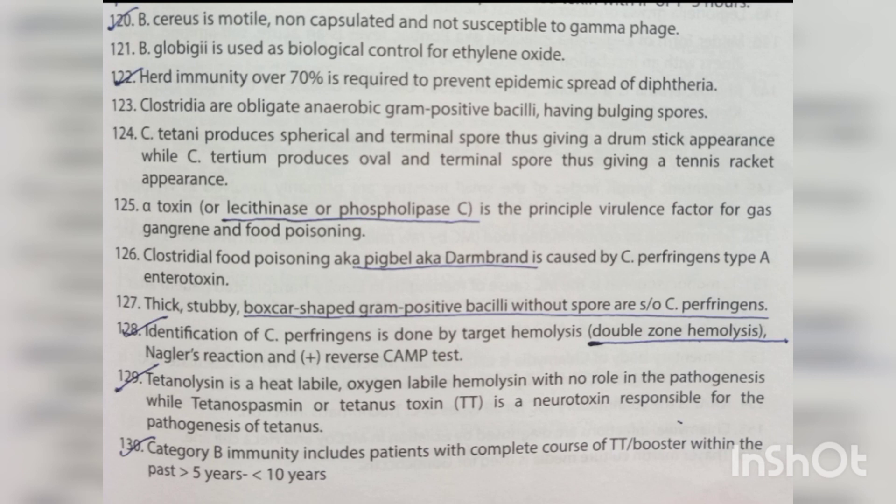Alpha toxin (lecithinase/phospholipase C) is the principal virulence factor for gas gangrene. Clostridial food poisoning (big belly/Darmbrand) is caused by Clostridium perfringens type A enterotoxin. Thick, stubby, boxcar-shaped gram-positive bacilli without spores are suggestive of C. perfringens. Identification is done by target hemolysis, double zone hemolysis, Nagler reaction, and positive reverse CAMP test. Tetanolysin is a heat-labile, oxygen-labile hemolysin with no role in pathogenesis; tetanospasmin (tetanus toxin) is the neurotoxin responsible for tetanus pathogenesis.